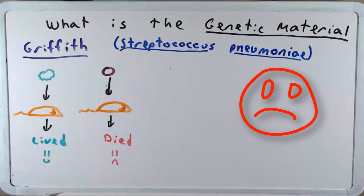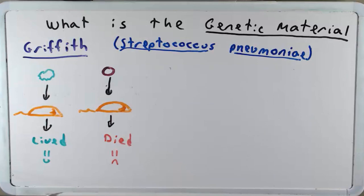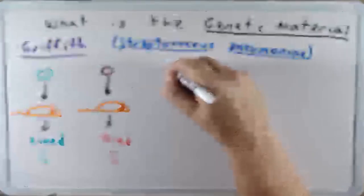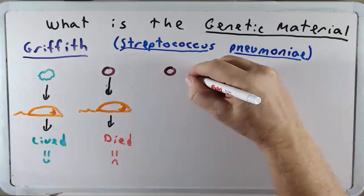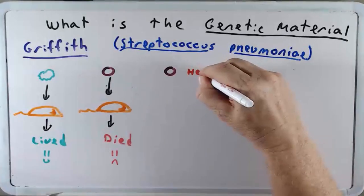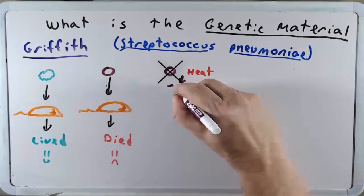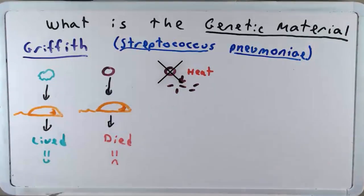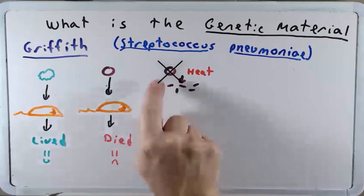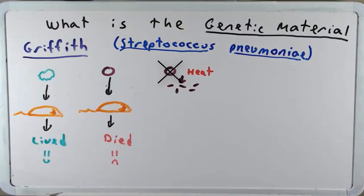Now when he took this smooth bacterium and he injected that into a different mouse, the mouse died. And if you were to take samples from the mouse you would discover that it still had this smooth bacterium in it. So next he took this smooth bacterium and heated it up which degraded the bacterium. But it's important to remember all the parts of that bacterium were still there. Meaning all the RNA, all the DNA, all the proteins, all the carbohydrates. They were all still there. It just wasn't a living cell.